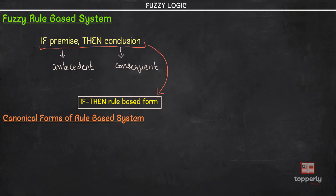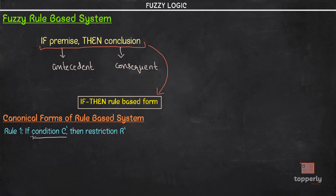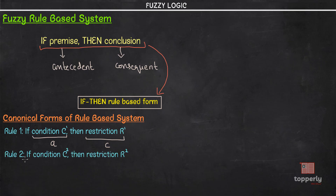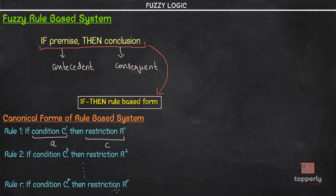Next we have the canonical form of the rule-based system. We have canonical forms given as: Rule 1 — if condition is C1, then the restriction is R1. And like that we have many number of rules. The R-th rule is given by: if condition is CR, then restriction is RR. All of these are called canonical forms of the rule-based system and all of them are in the form of the if-then rule-based form.